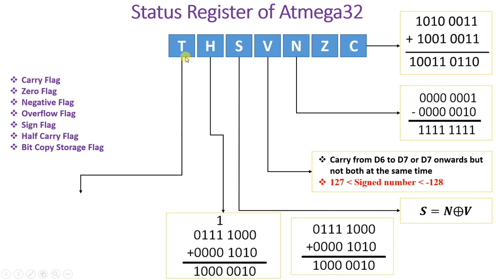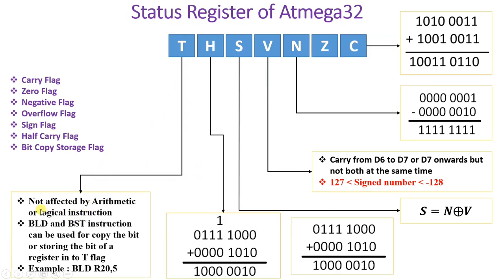Next is the T flag, the Bit Copy Storage flag. It is not affected by arithmetic and logical instructions. We use this flag with BLD and BST instructions, which provide the facility of loading and storing one bit at a time. For example, BLD R20,5 loads the T flag bit into the fifth location of register R20. Similarly, BST R20,5 stores the fifth bit of R20 into the T flag.